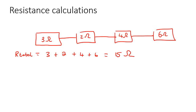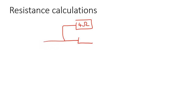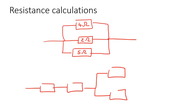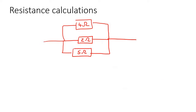Now let's do a parallel example. Say we have a 4 ohm, a 2 ohm, and a 5 ohm all connected in parallel. Later in this lesson we'll also have scenarios with a series connection followed by a parallel connection, so stay tuned. What you do here is say 1 over R total equals 1 over 4 plus 1 over 2 plus 1 over 5.